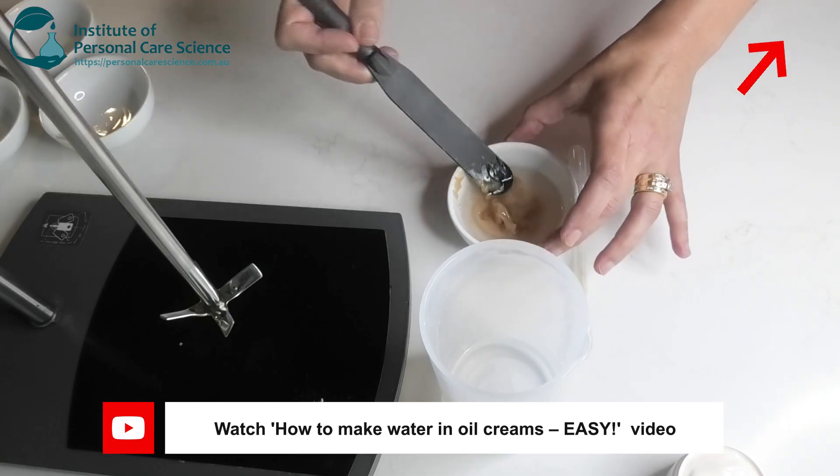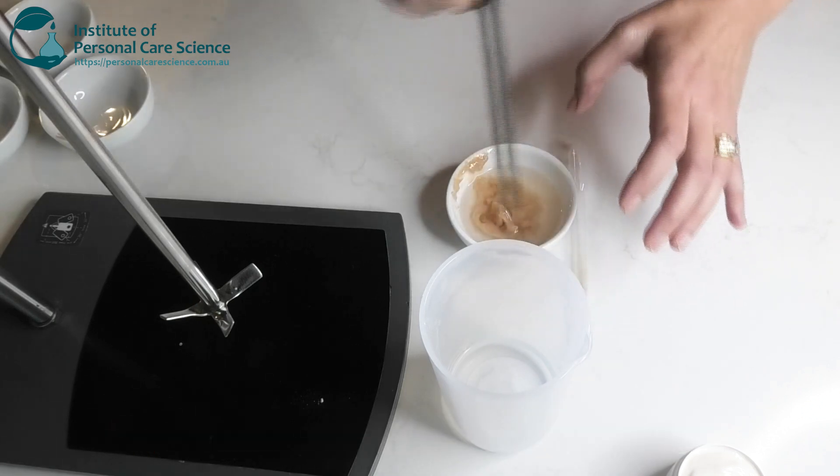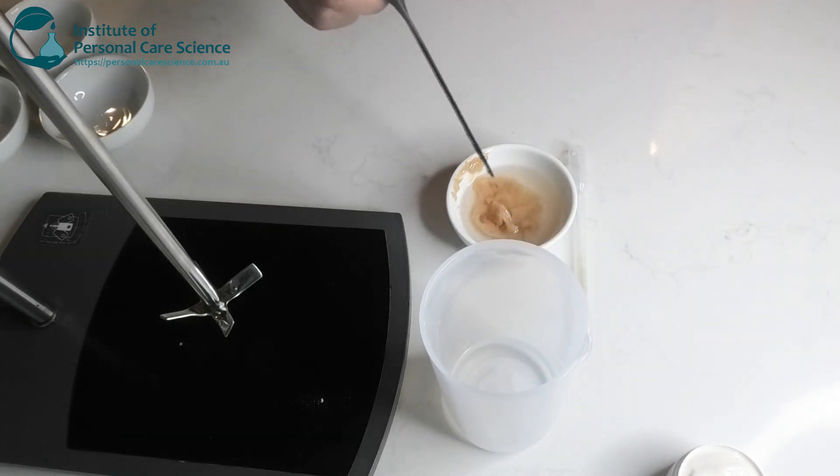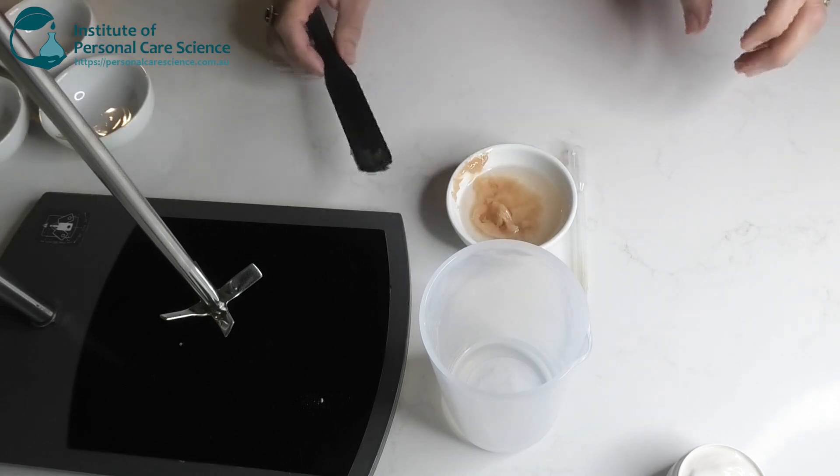I'm just going to pop that on a propeller mixer until that's quite smooth, before we put it into the water phase. Now the trick with this is to keep going as you're blending. So I'll just pop that in.